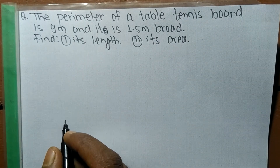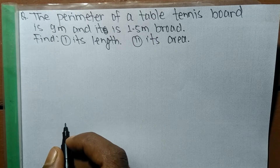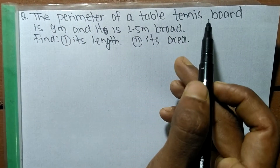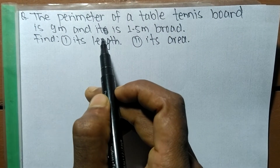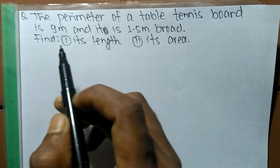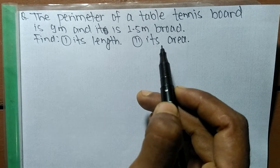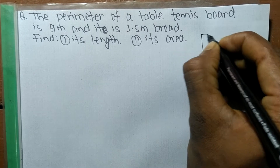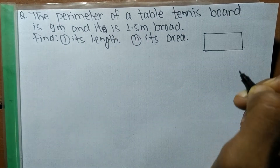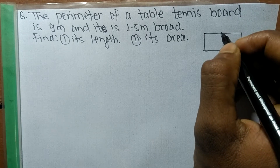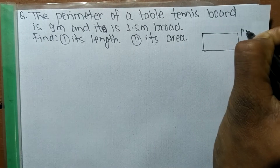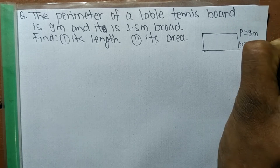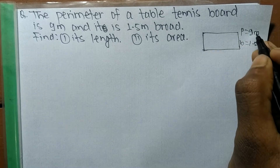Today we are going to solve a word problem. The question is: the perimeter of a table tennis board is 9 meters and it is 1.5 meters broad — find its length and its area. As you know, a table tennis board is rectangular in shape. We are given its perimeter which is 9 meters and its breadth is 1.5 meters.